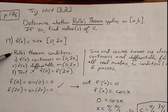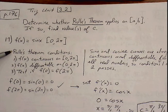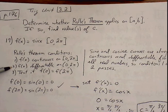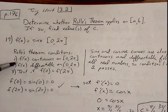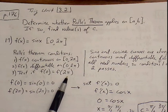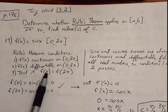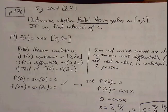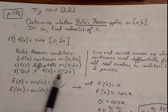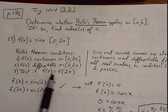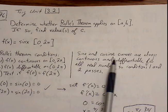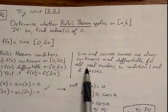Let's consider Rolle's Theorem conditions and what it tells us. First, our function needs to be continuous on the closed interval. Our function needs to be differentiable on the open interval between our endpoints. We also need to make sure that our endpoints have the same y value. If all three conditions are true, then we can guarantee that somewhere between these two endpoints, we're going to have a slope of a tangent line that is exactly zero. Sine and cosine curves are always continuous and always differentiable for all real numbers.